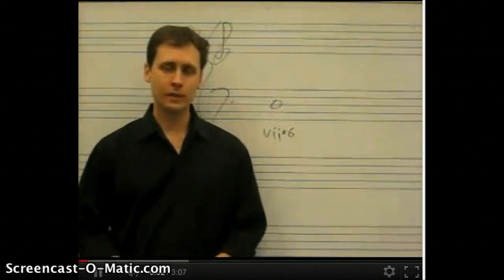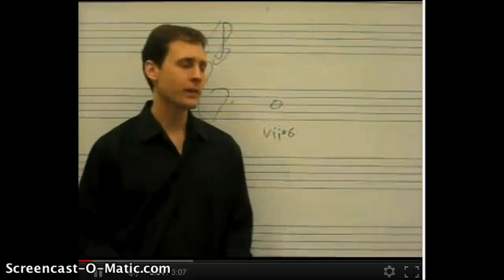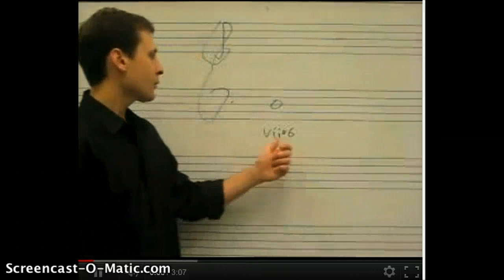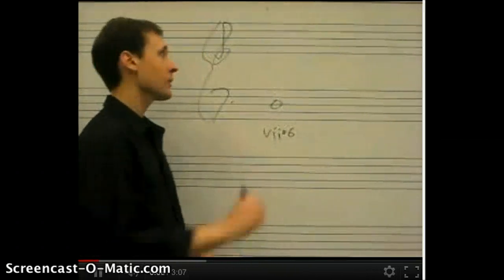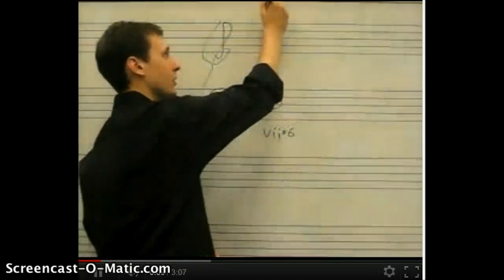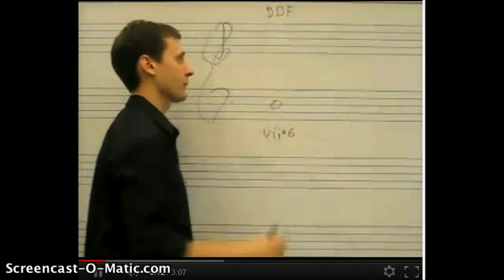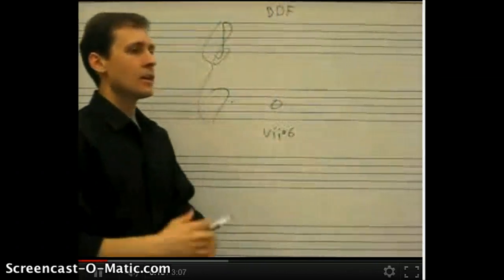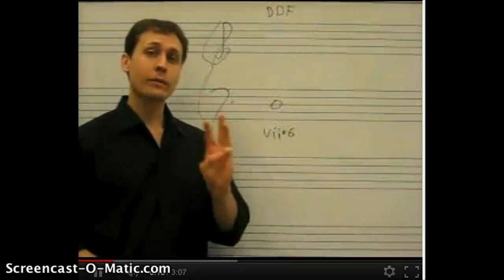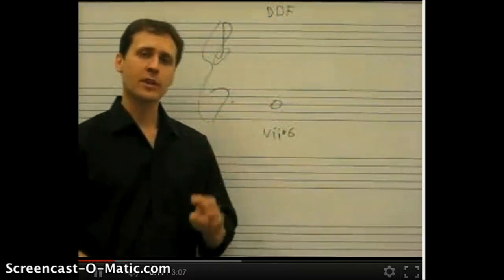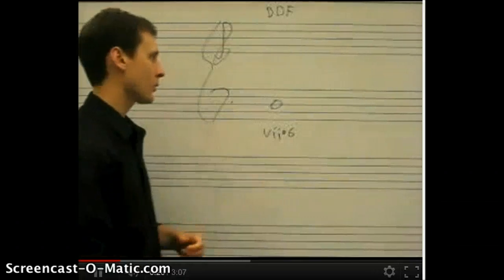Let's take a look at how we treat the leading tone triad in part writing. If we know that this is a leading tone triad in first inversion, the notes we need are B, D, F. When we add the soprano note, we have three choices. Let's take a look just one by one and see how it works.